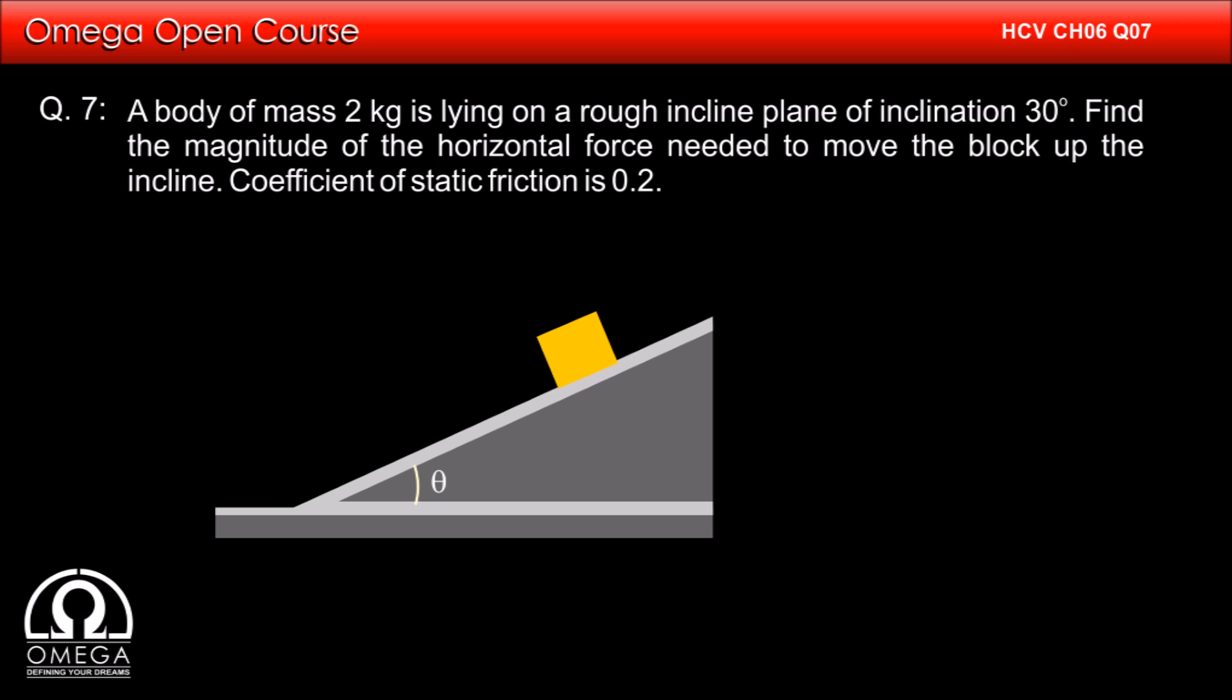A body of mass 2 kg is lying on a rough inclined plane of inclination 30 degrees. Find the magnitude of the horizontal force needed to move the block up the incline. Coefficient of static friction is 0.2.